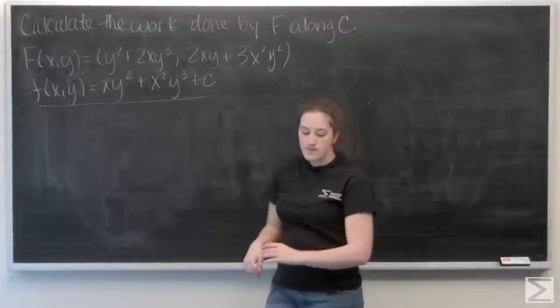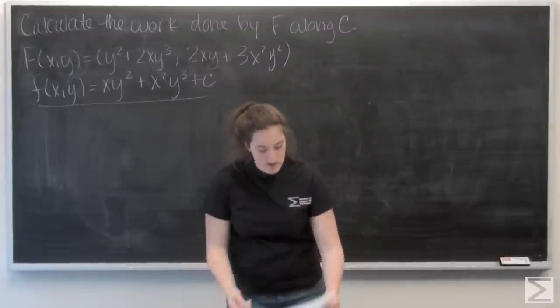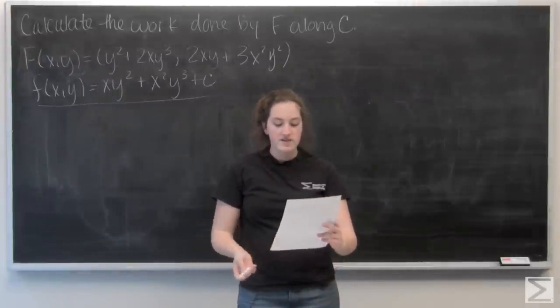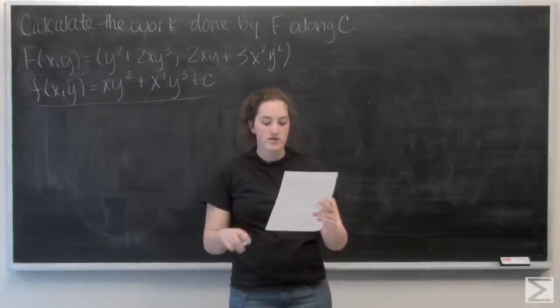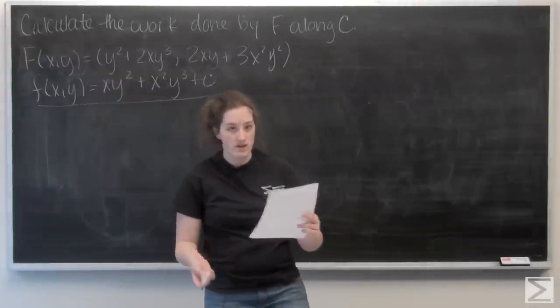So let's take a look at what our curve c is. So c consists of the top half of a circle of radius 1 centered at the origin, oriented clockwise.